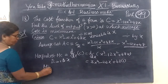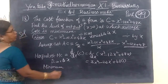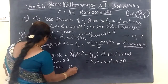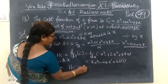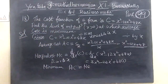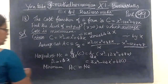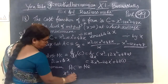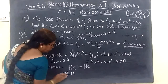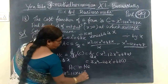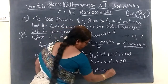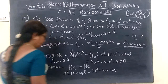For minimum average cost, average cost is equal to marginal cost. So average cost equals marginal cost: X squared minus 12X plus 48 is equal to 3X squared minus 24X plus 48.